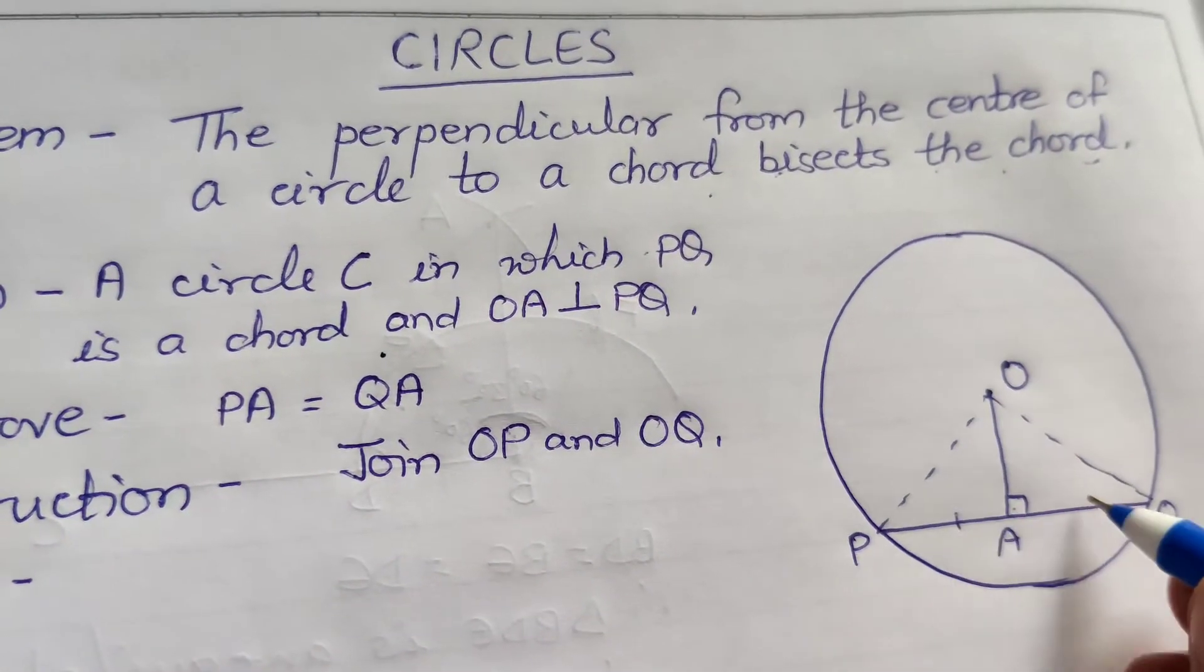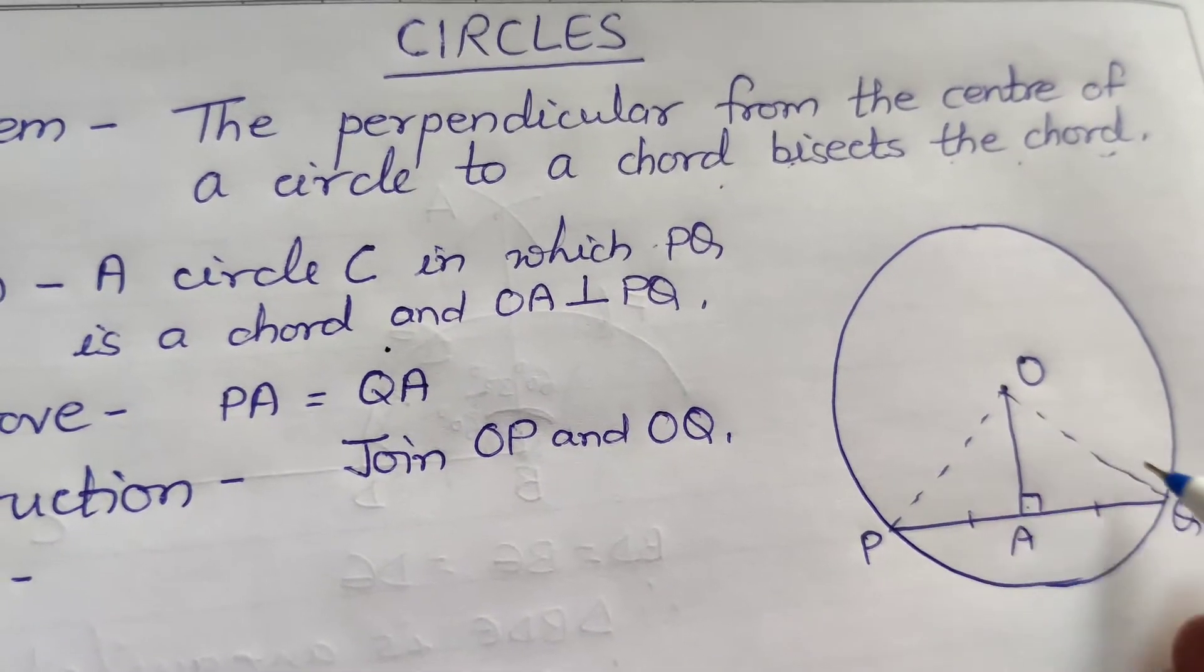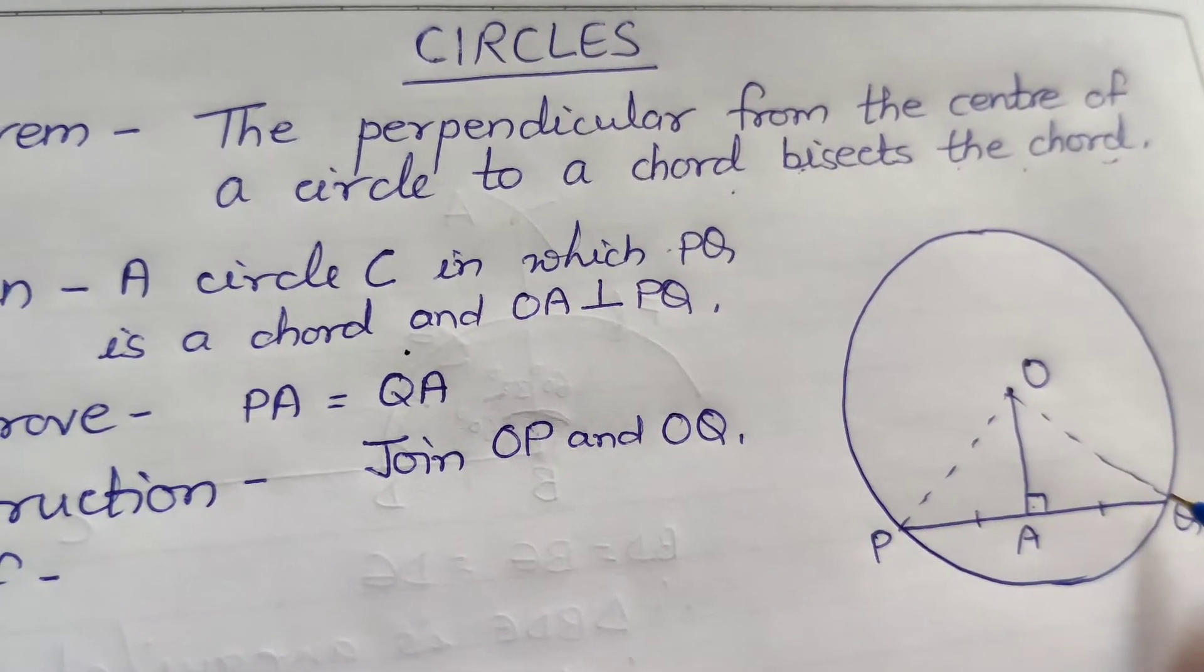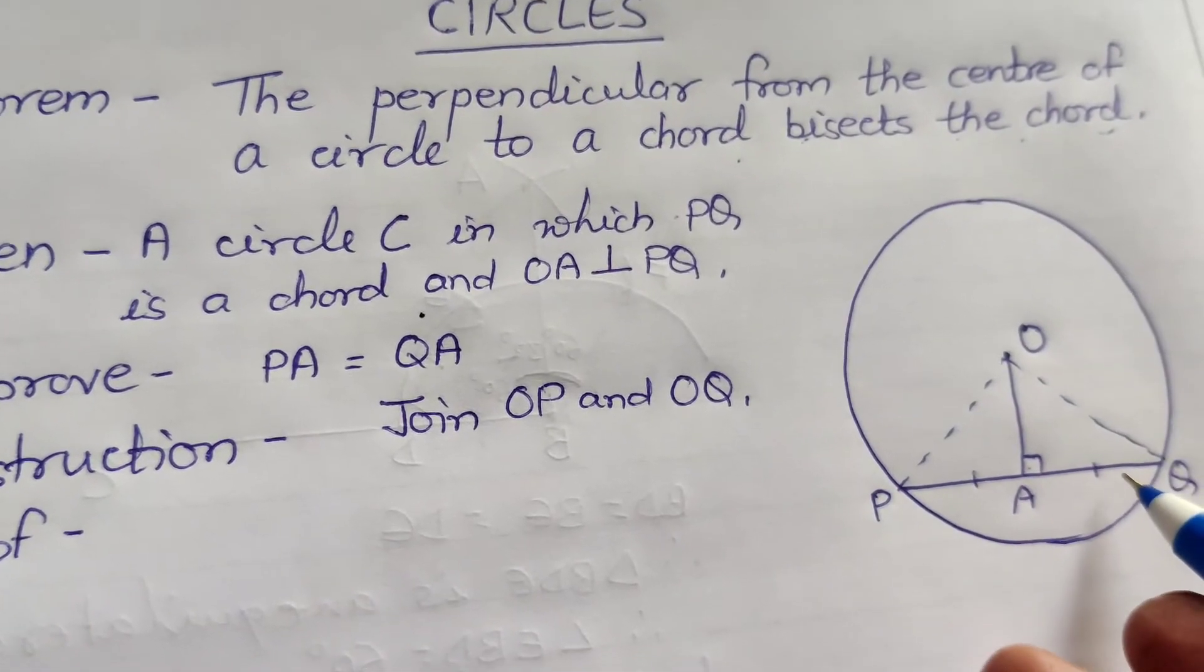It means PA equal to QA bisects the chord. Or haomne join kya kiya hai? O, P and O, Q ko. Kyunki O, P and O, Q kya hai? Radia hai. Aab isko prove karayenge haom loog PA equal to AQ.